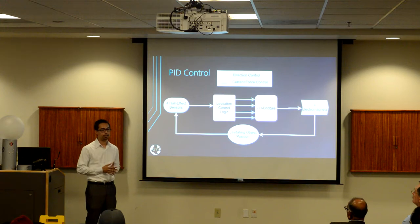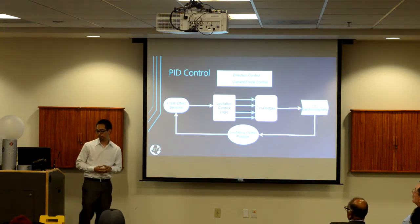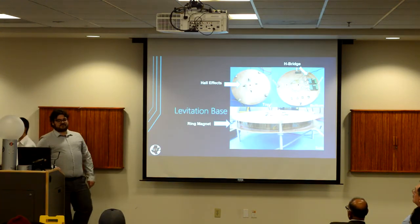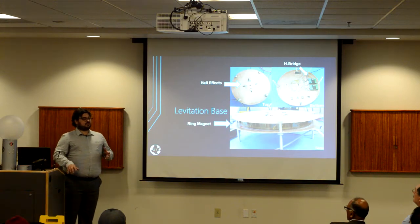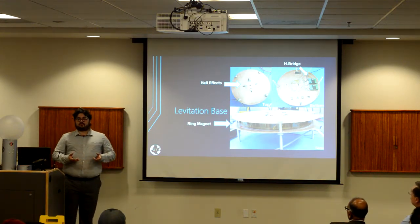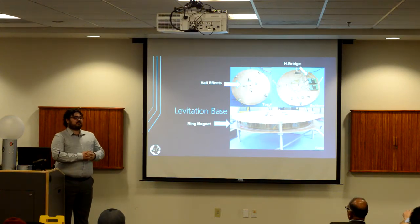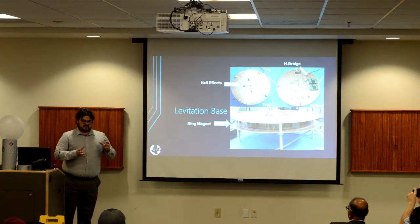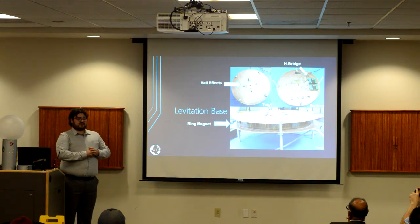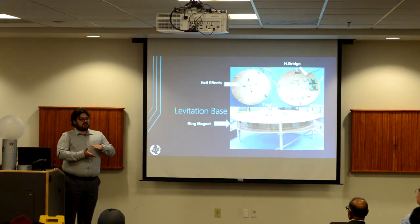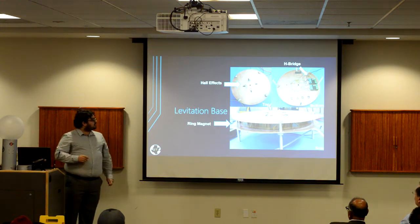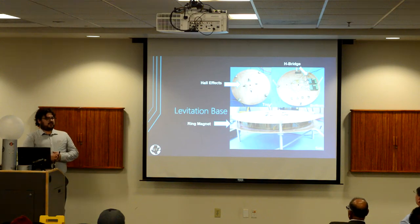Now to discuss the physical design of our levitation system: our levitation base has two printed circuit boards. These circuit boards not only connect all our elements together, they also provide a stable structure to hold our system in place. On the top board we place our Hall effect sensors, which keeps them in a fixed position for a more stable reading of the magnetic field. On the bottom, you can see how we're clamping our permanent magnet and our electromagnets using both printed circuit boards.